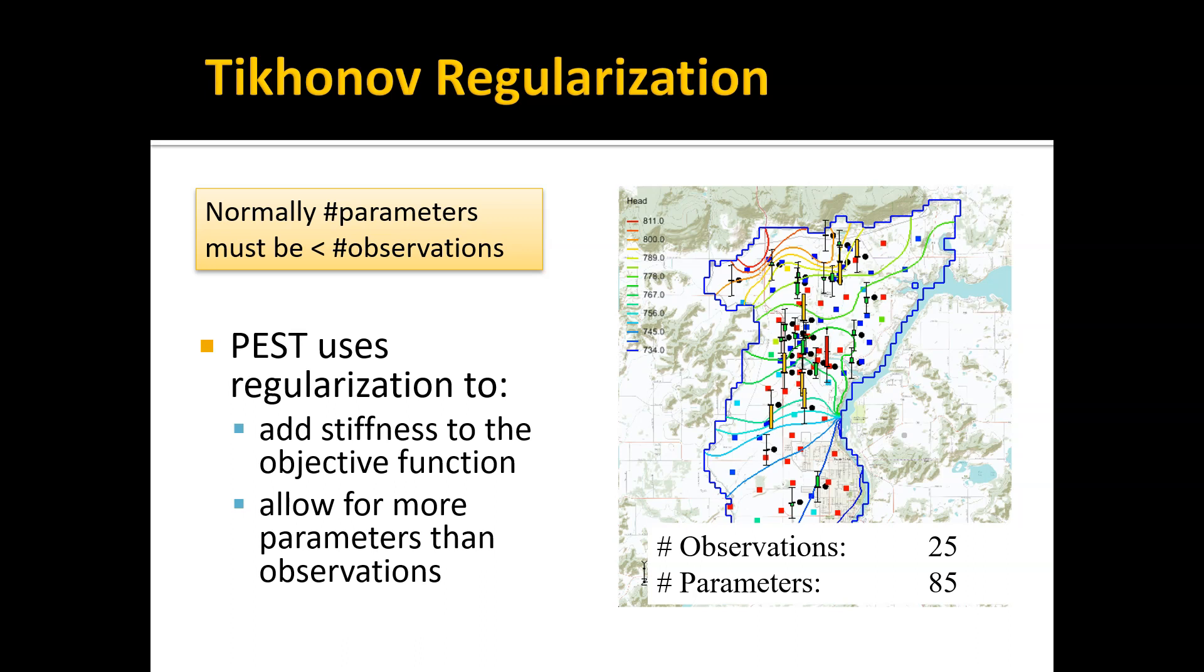What regularization does is it adds stiffness to the objective function. The objective function is this underlying implicit mathematical feedback of how the model responds based on the observed heads in an attempt to minimize calibration error. The problem when you have more parameters than observations is there's just too many degrees of freedom—there's not enough constraints. It's like having more unknowns than you have equations to solve for them.